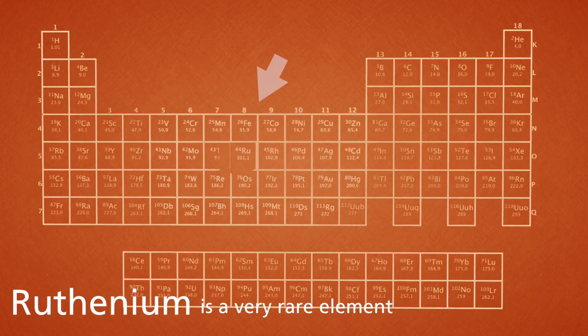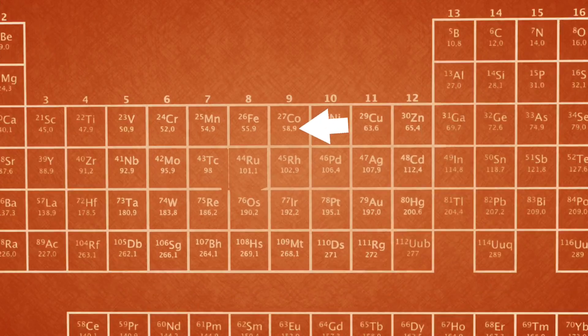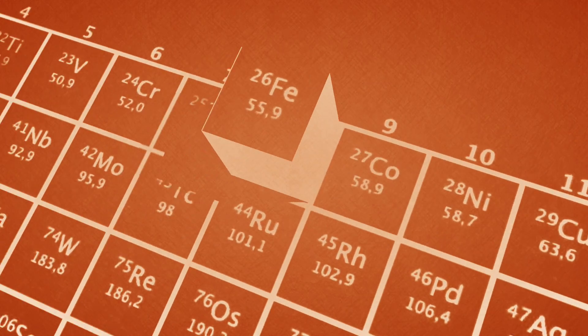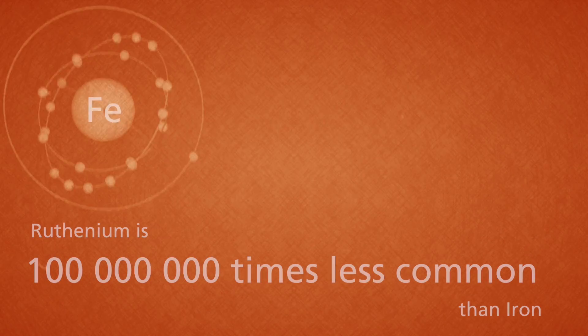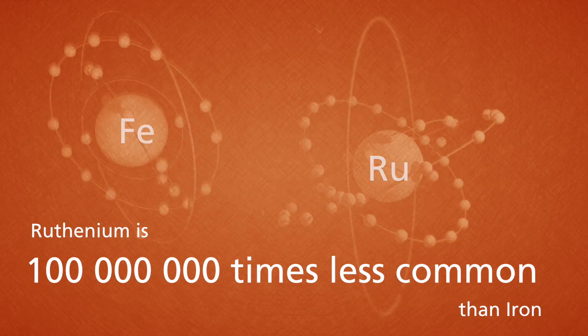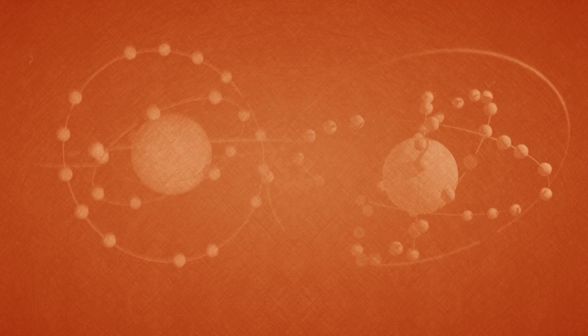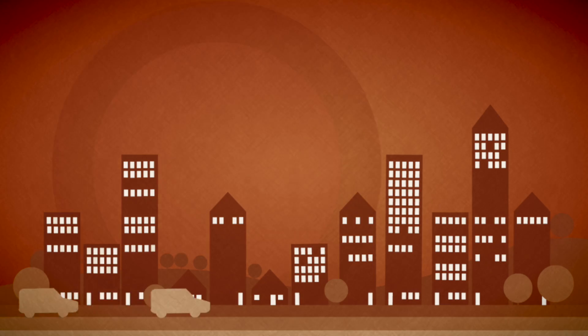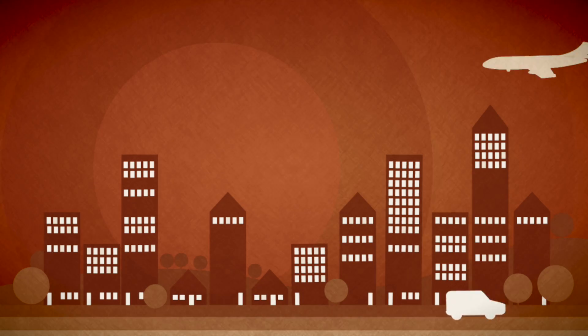Our idea was to use instead an iron-based dye molecule. Iron is very abundant on Earth. Ruthenium, on the other hand, is something like a hundred million times less common in nature. We want to replace it by iron, and this opens up for large-scale inexpensive solar energy.